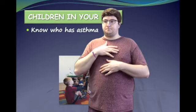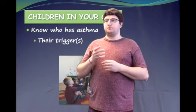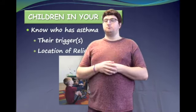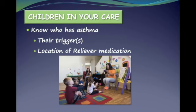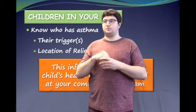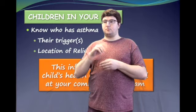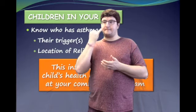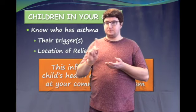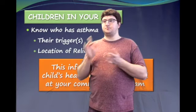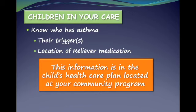It is important for community program personnel to know which children in their facility have asthma, as well as what their triggers are and the location of their reliever medication. This information can be found in the child's asthma health care plan, which is located at your community program. If you do not already know this child-specific information or where to access their health care plan, talk to your administrator.